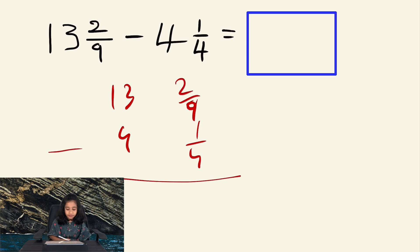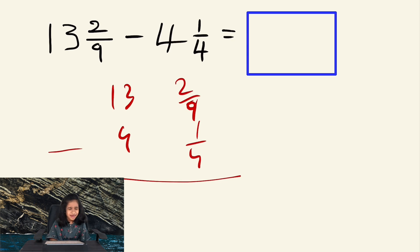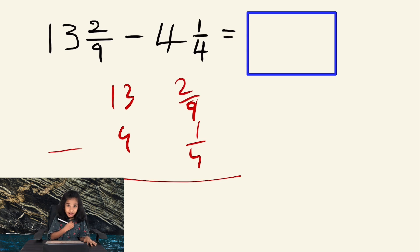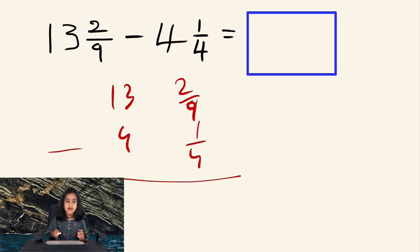So first, I want to deal with the fractional part. As you can see, there are unlike fractions. We hate to deal with unlike fractions, right? So let's convert them to like fractions so we definitely like it. For that, I need the least common multiple of the denominators, which are 9 and 4.